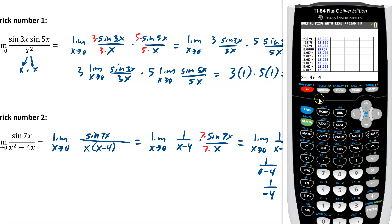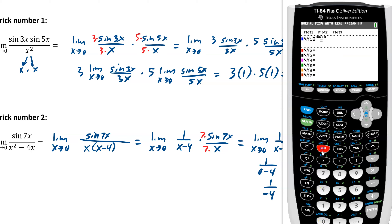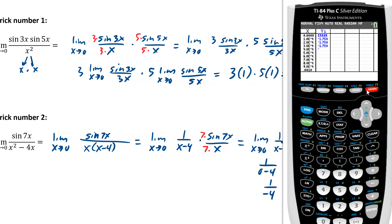Let's check that in the calculator. We plug in sine 7x over x squared minus 4x, approach 0, make sure we start at 0 with a very small distance, go to the second table, and there it is — negative 1.75 from the right and the left. Everything checks out perfectly.